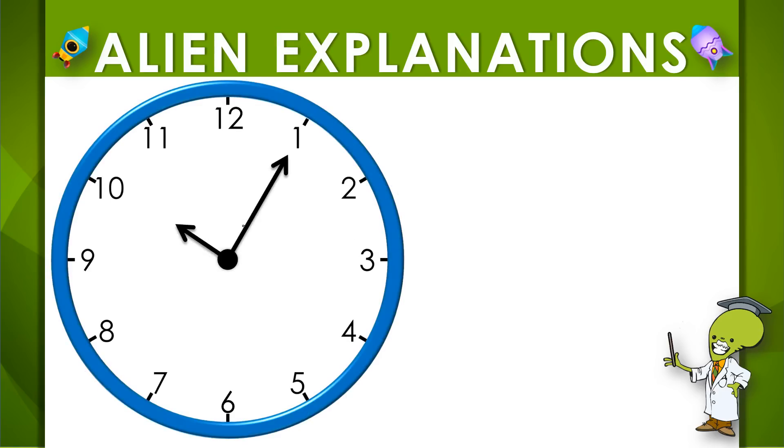One more example. In this problem, the shorthand is pointing directly past the ten a little bit. So it is ten something. Now let's count by five. So ten, ten oh five is how we would say that time.